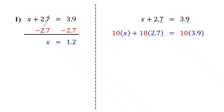10 times x is 10x. 10 times 2.7 is 27. 10 times 3.9 is 39. Now there are no decimals. From here, we just solve it like a regular two-step equation.